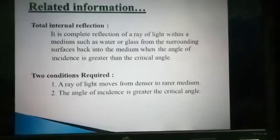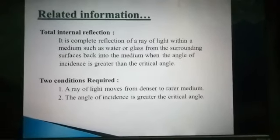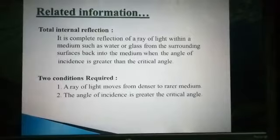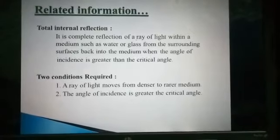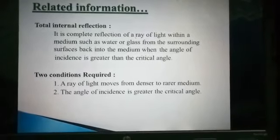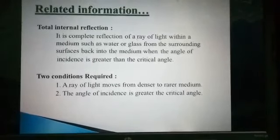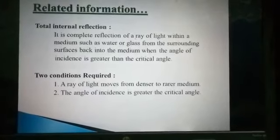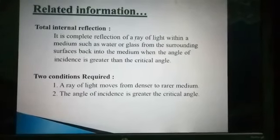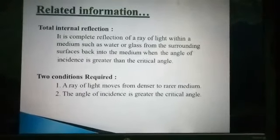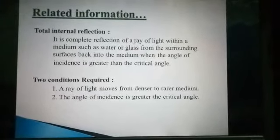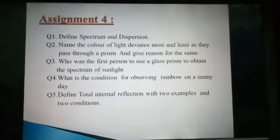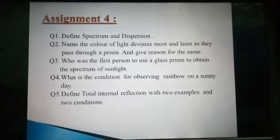The definition of total internal reflection: it is the complete reflection of a ray of light within a medium such as water or glass from the surrounding surface back into the medium when the angle of incidence is greater than the critical angle.